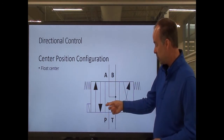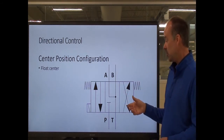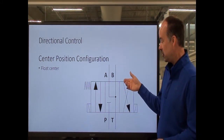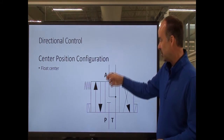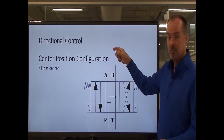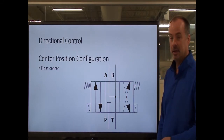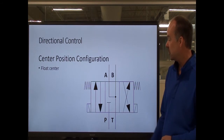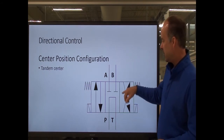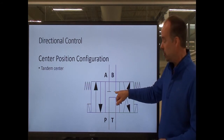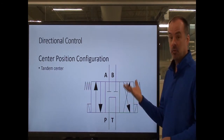The float center blocks the pressure port but ties A and B together back to the tank. This allows an actuator to float in the center position. For example, with a double-action cylinder, you could actually grab the cylinder and slide it in and out because the two ports are tied together, allowing fluid to flow between the two ends of the cylinder. Tandem center is similar to open center, except the actuator ports are not open — pressure dumps straight to tank, but whatever actuator is connected will be locked and not allowed to move.